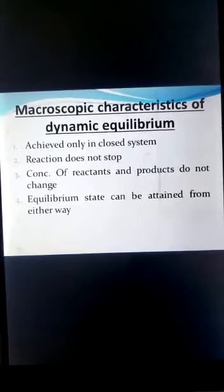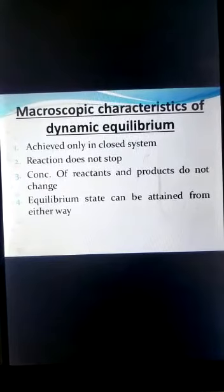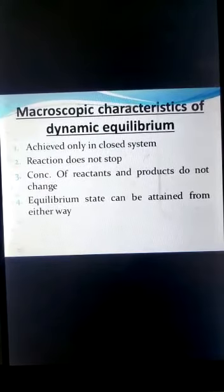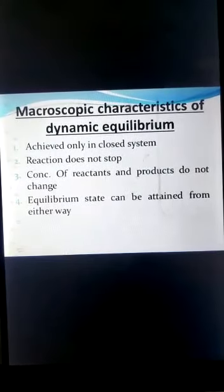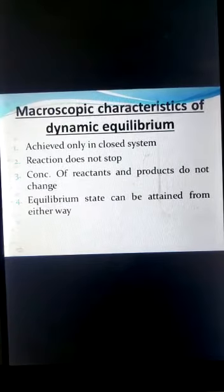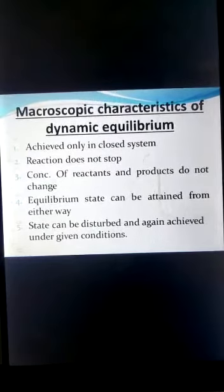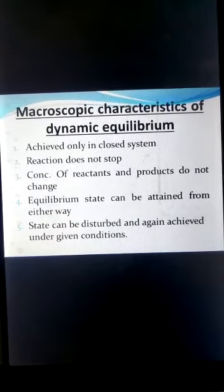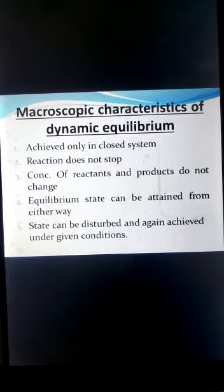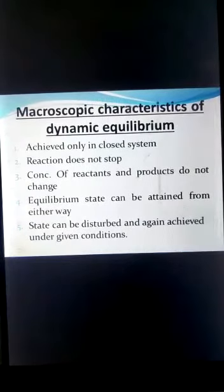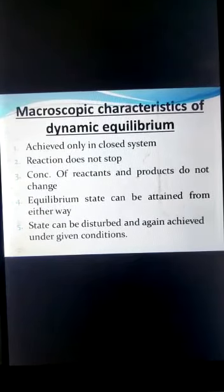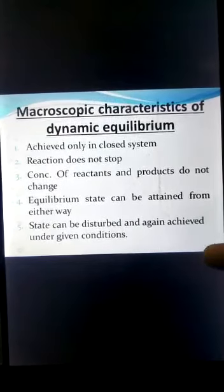This equilibrium can be attained from either direction — from products to reactants or from reactants to products. Once dynamic equilibrium is attained, it can be disturbed and then re-achieved again under the given conditions of temperature and pressure.